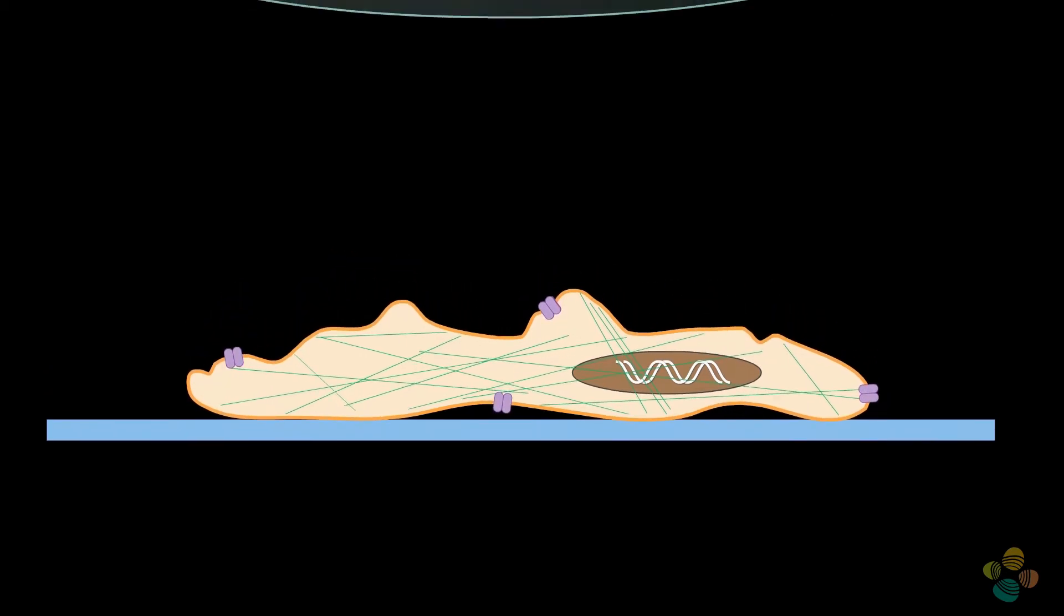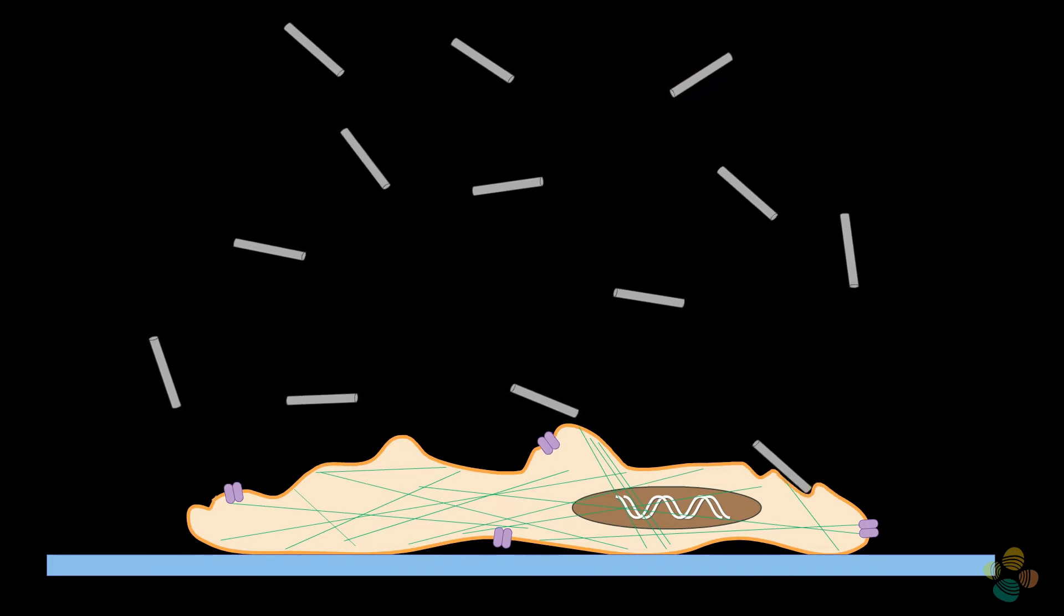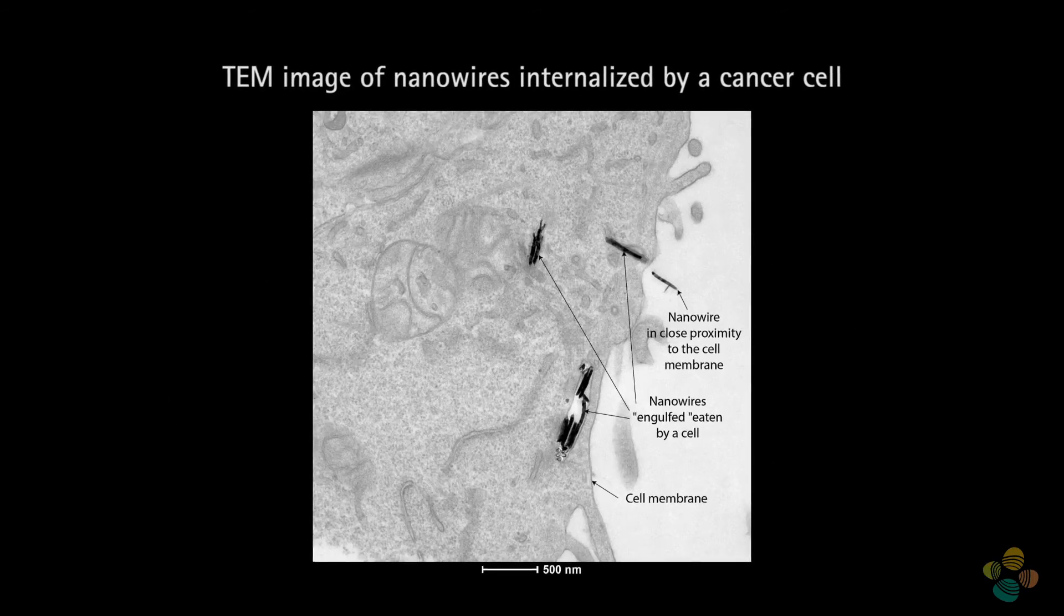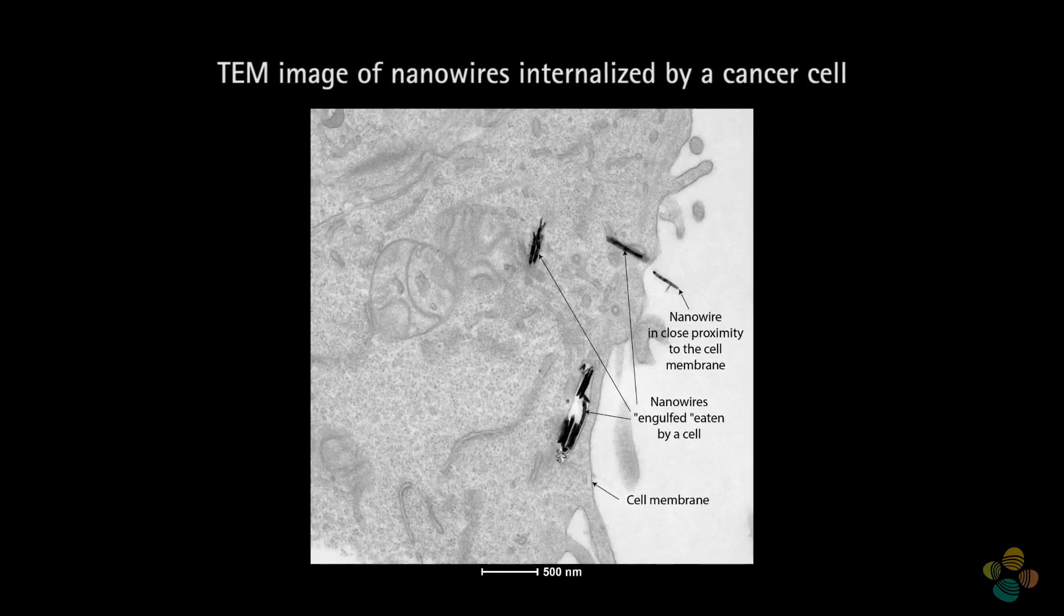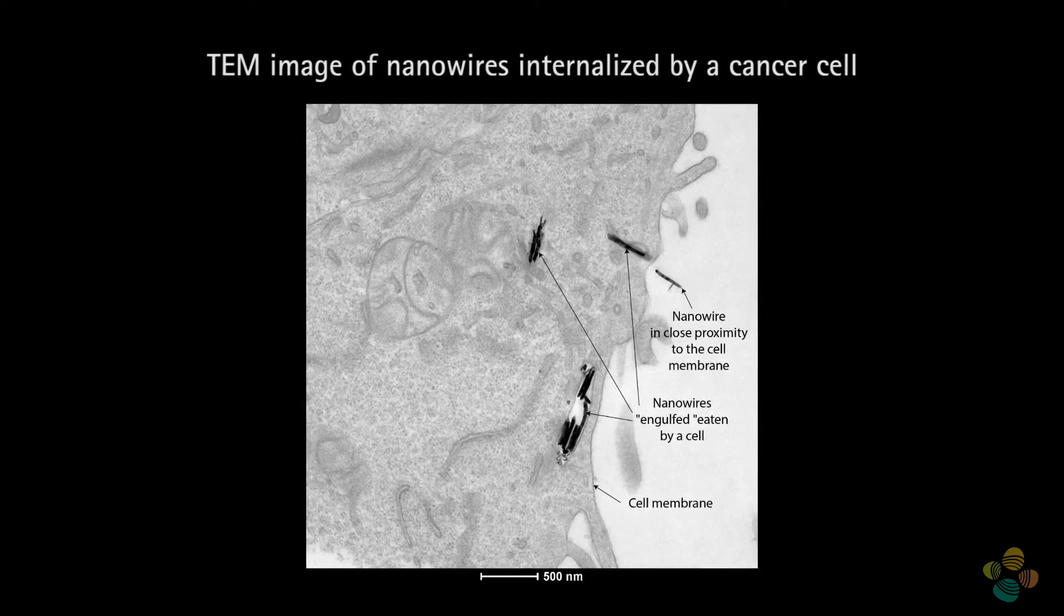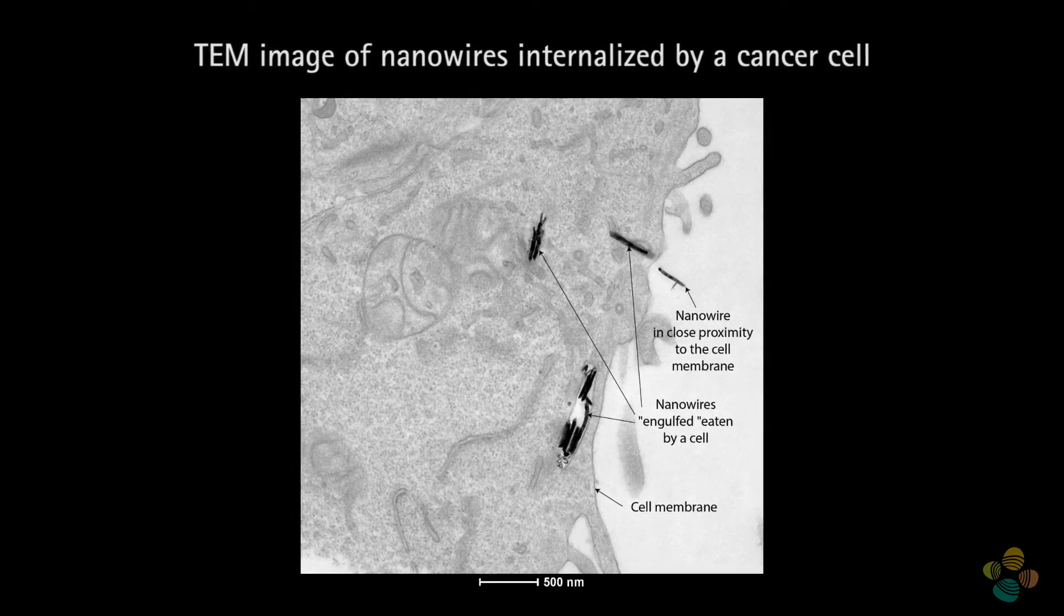The nanowires will move randomly in the cell culture medium and eventually get in contact with the cells. Then they are internalized by them. We have experimental evidence that this happens in our cells within one hour or even less time. Nanowires can get in contact with different membrane receptors or get inside vesicles if fully internalized.